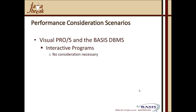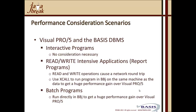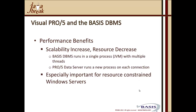Performance scenarios to consider: Visual Pro5 with BASIS DBMS for interactive programs requires no special consideration. For read/write-intensive report programs iterating through data files, the operations cause a network round-trip as they currently do, but you could use X-call to run the program in BBJ on the same machine as the data for a huge performance gain. Similarly, batch programs run directly in BBJ yield a large performance gain over Visual Pro5 clients. Moving to BASIS DBMS also brings scalability increases and resource decreases: the BASIS DBMS runs in a single JVM process with multiple threads, versus the Pro5 data server which spawns a new process per connection — significantly better for resource-constrained Windows servers and high user counts.